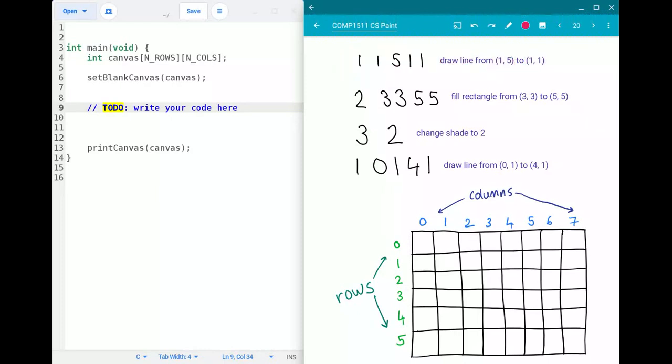So just to illustrate that on the canvas down here starting location 1 5 is going to be row 1 column 5 so this point here going through to an end location of 1 1 so this row and this column here so this point here. So that means that if your program was given this 1 1 5 1 1 command here it should draw a line from this point here across to this point here so a solid line like that.